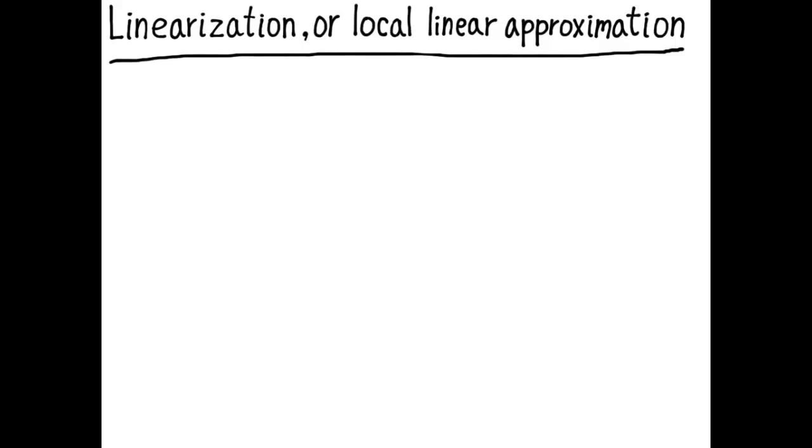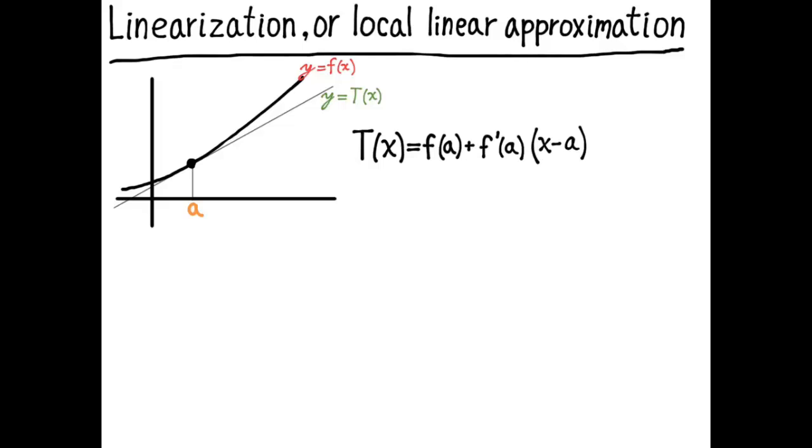We've already discussed linearization and using a local linear approximation. In this process, we take a curve and consider one point on the curve, and we look at the tangent to the curve at that point. We define that tangent line as a new function, which we'll call T(x), where T stands for tangent. The equation for the tangent function T(x) is found from the point-slope form for the equation of the line.